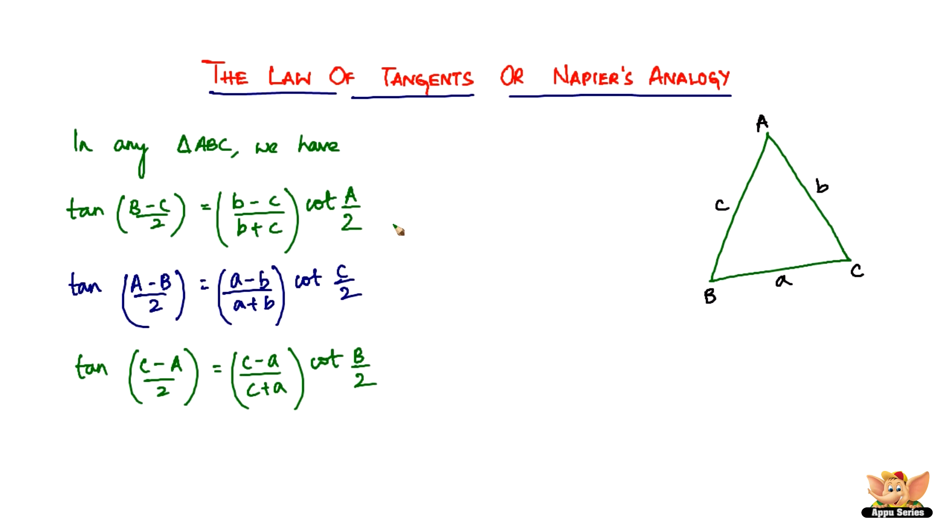Alright, so these are the three formulas or laws which are called Napier's Analogy or the Law of Tangents. So that's all. We will be using these and solving problems based on these in the forthcoming videos. So I'll see you in the forthcoming videos with problems based on all the laws that we've done till now.